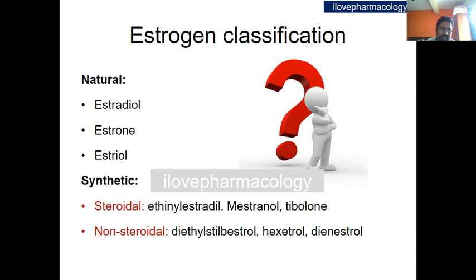The synthetic estrogens are divided into steroidal and nonsteroidal. Steroidal examples include ethinyl estradiol, mestranol, tibolone; nonsteroidal examples include diethylstilbestrol, hexestrol, and dienestrol.